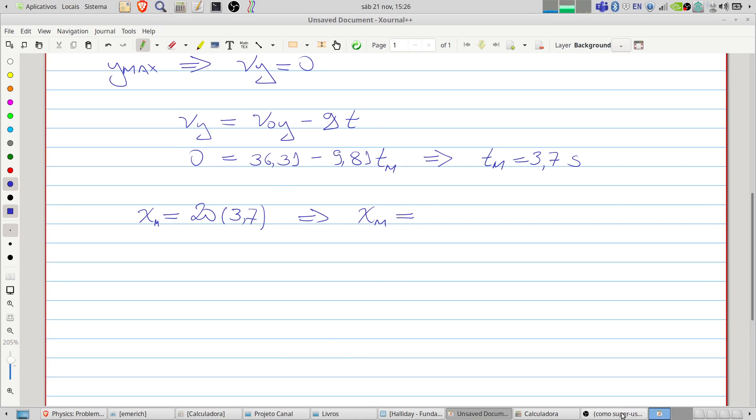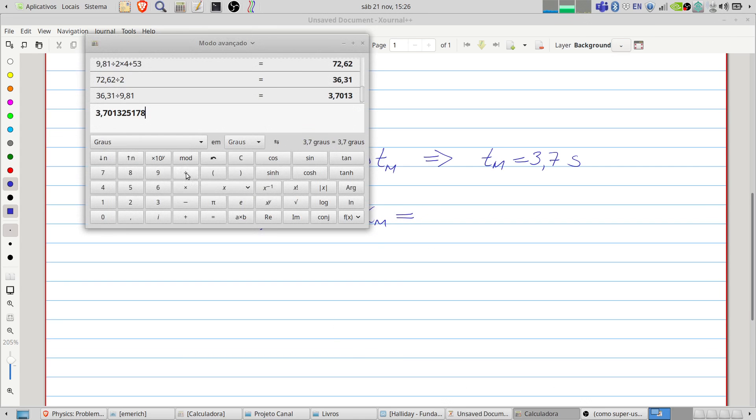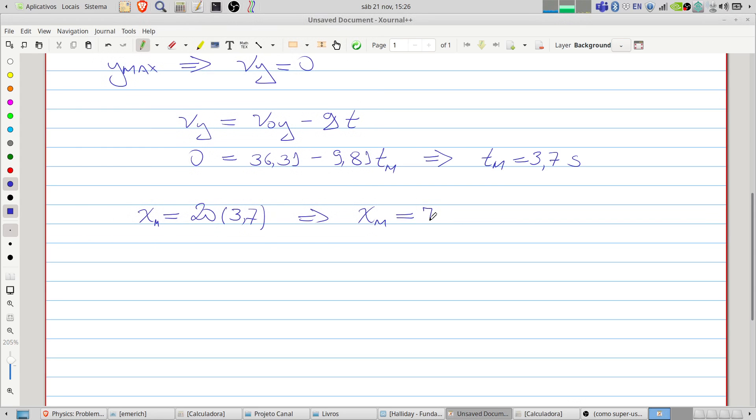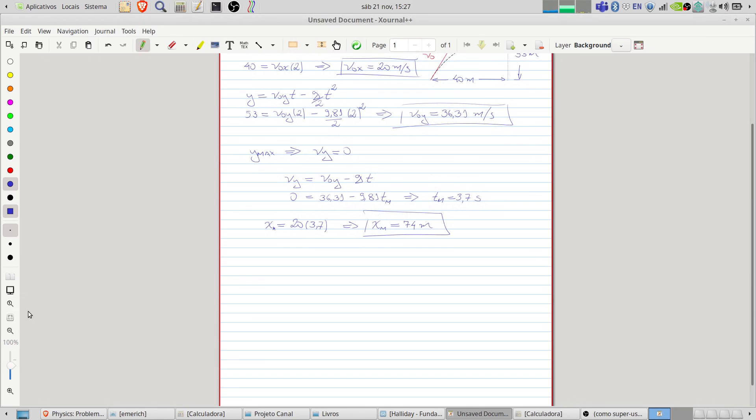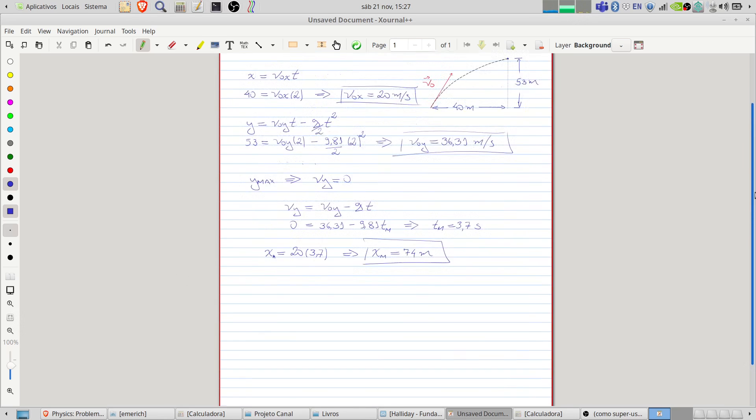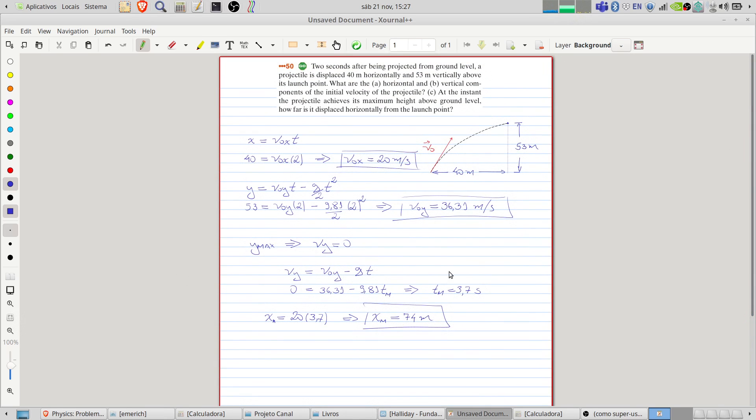Let's do the multiplication, 3.7 times 20, and it will be approximately 74 meters. The problem is very easy, straightforward, and it's solved.